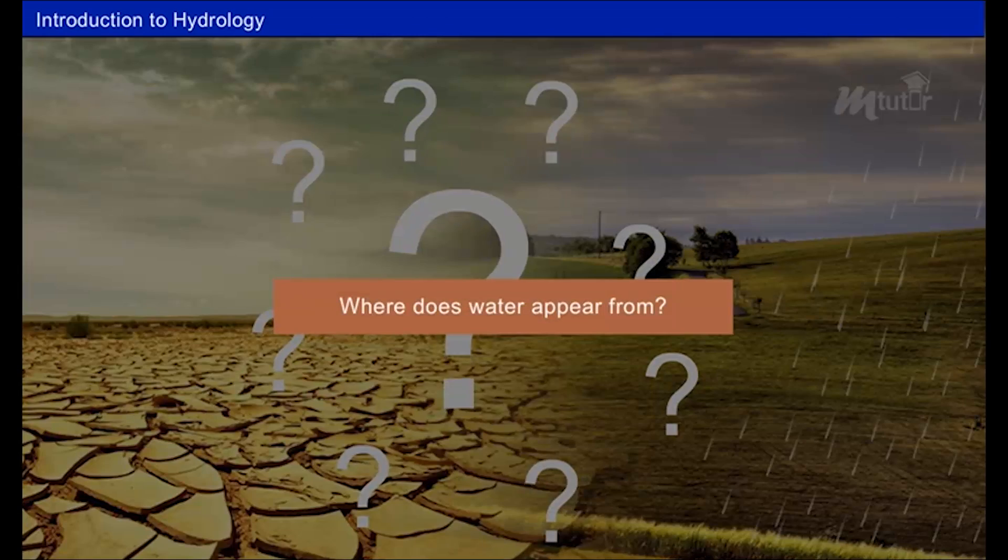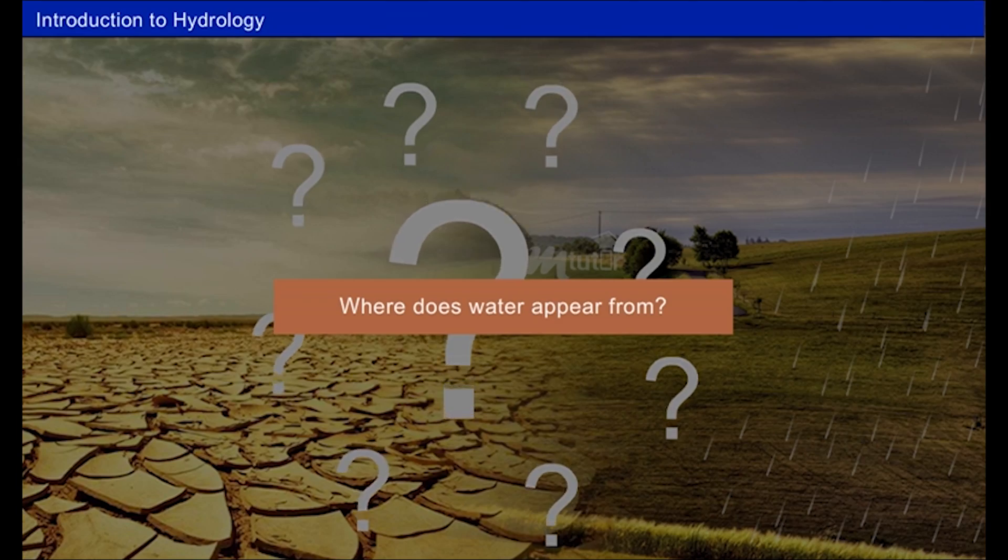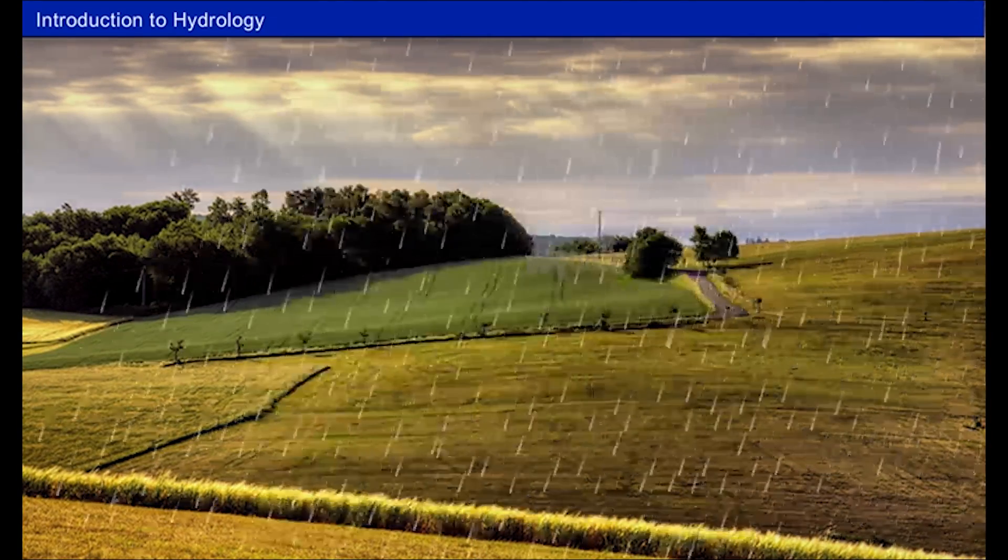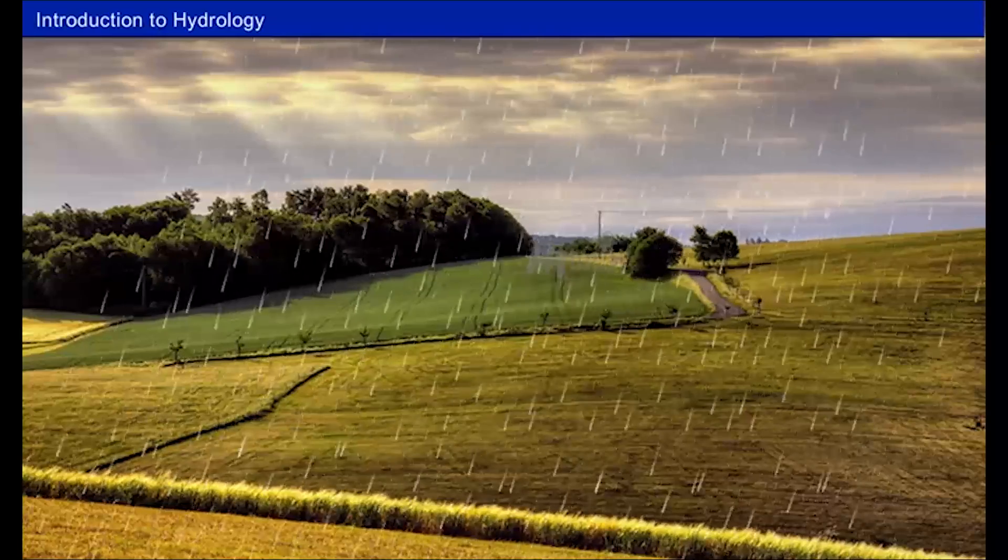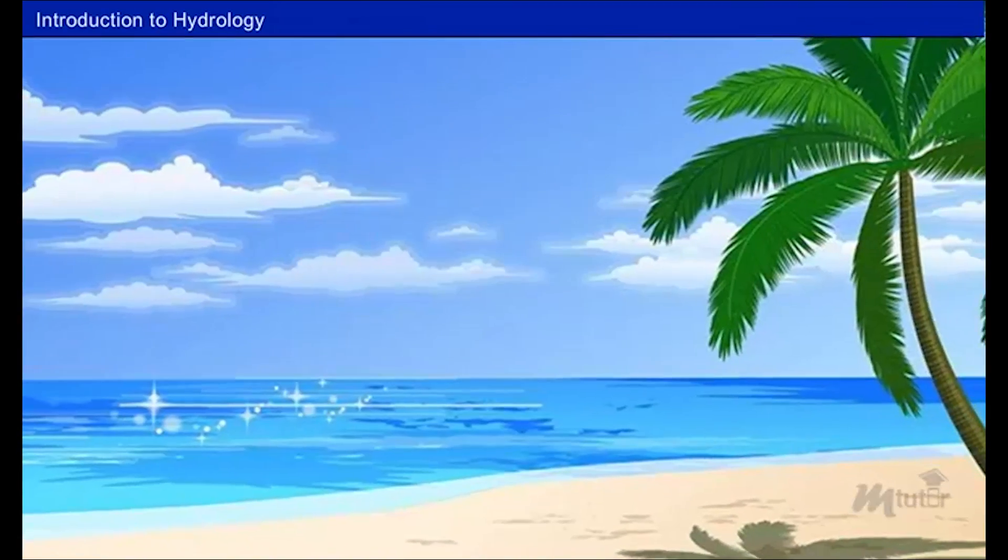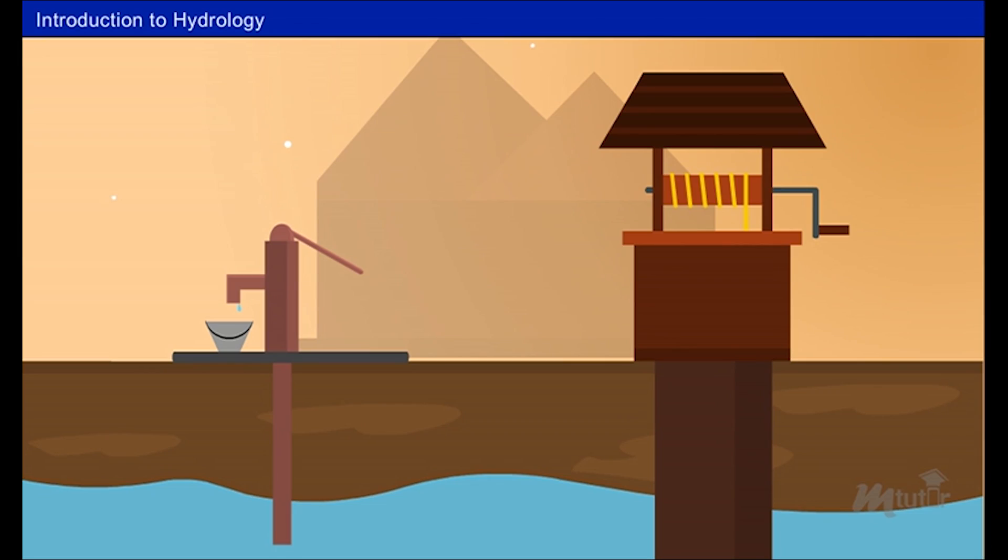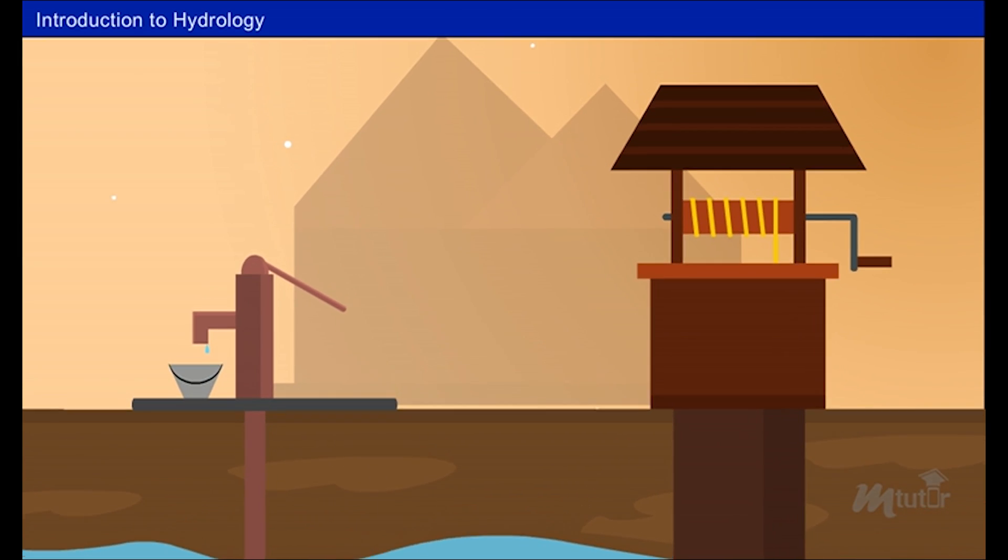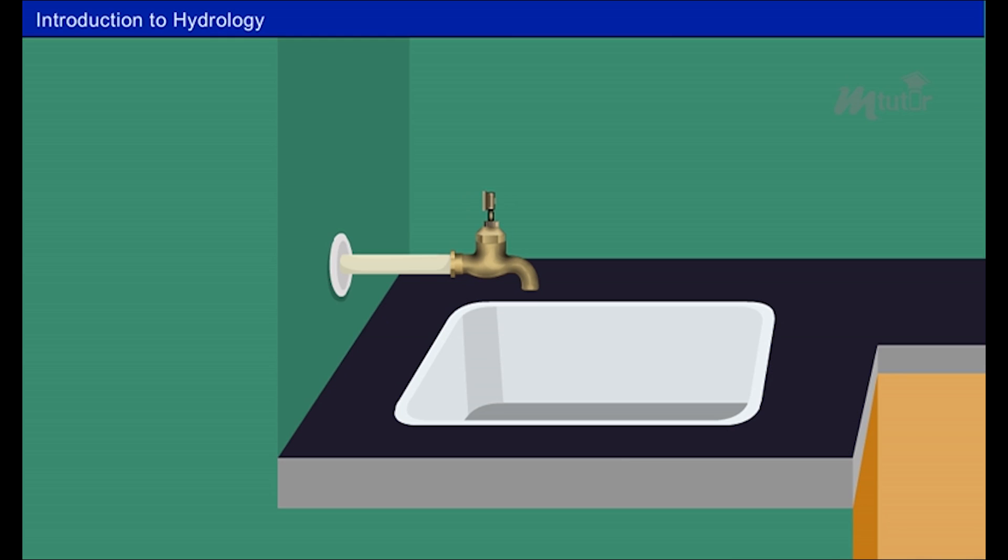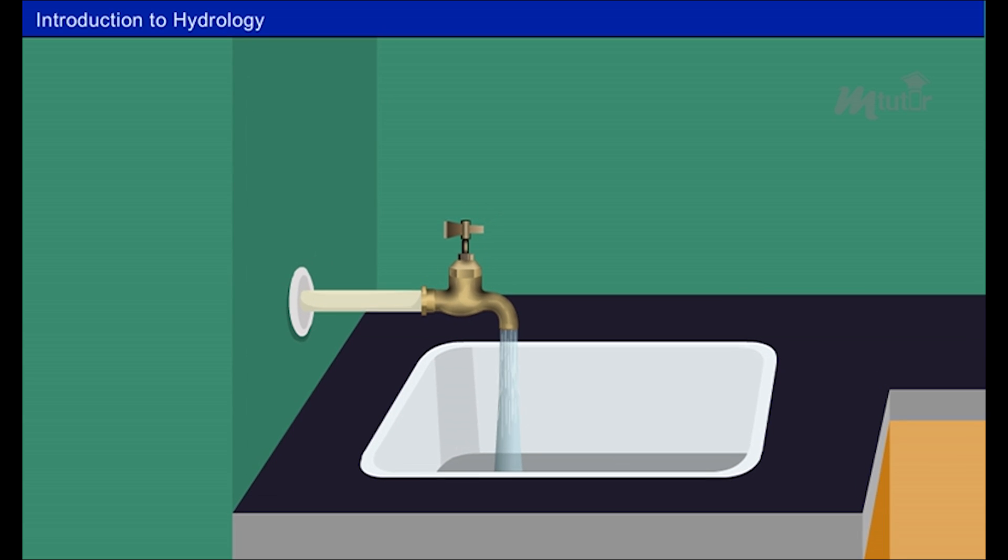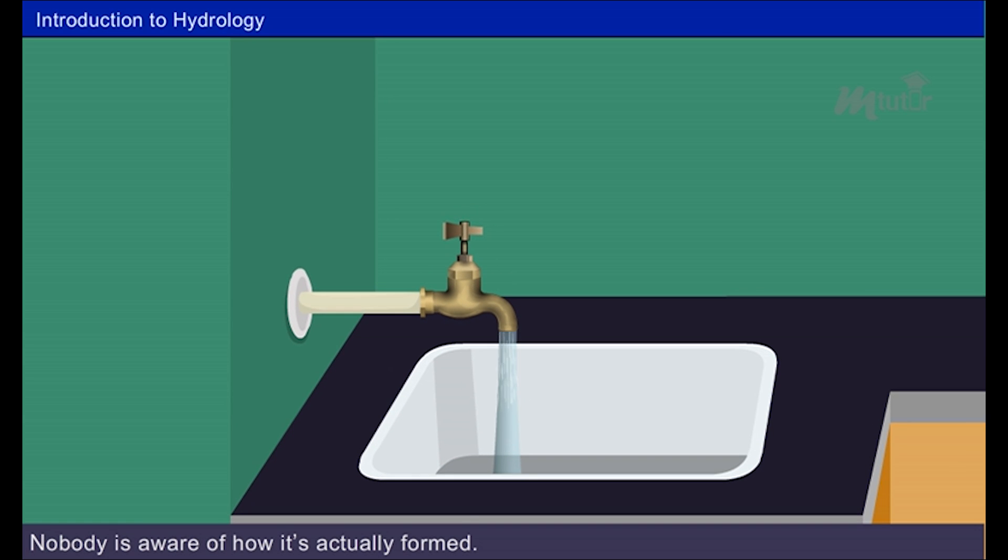The million dollar question is, where does water appear from? Different people have different opinions. Some say it downpours from the sky. Some others say it flows out from oceans. Another group of people say it is from underground. But some even say funny answer like, when we open the tap, it pours, that's it.